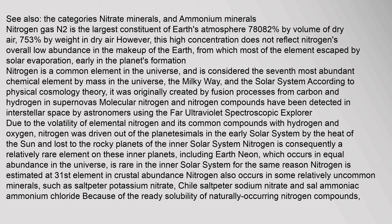Nitrogen gas N2 is the largest constituent of Earth's atmosphere — 78.082% by volume of dry air, 75.3% by weight in dry air. However, this high concentration does not reflect nitrogen's overall low abundance in the makeup of the Earth, from which most of the element escaped by solar evaporation early in the planet's formation. Nitrogen is considered the seventh most abundant chemical element by mass in the universe, the Milky Way, and the solar system. According to physical cosmology theory, it was originally created by fusion processes from carbon and hydrogen in supernovas.